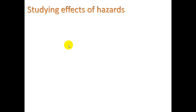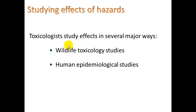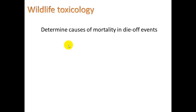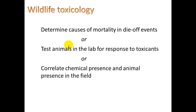Studying effects of hazards: we know there are toxicant molecules that present hazards, and we can study these in different ways. Wildlife toxicology studies is one way. We can also do human epidemiological studies, or dose-response studies in the lab — basically animal testing. Wildlife toxicology can be used to determine the causes of mortality and die-off events, like the condor dying off from the presence of DDT. Ultimately, we are trying to correlate chemical presence in the environment with animal presence in the field — is there a chemical reason for what's happening to the animals?